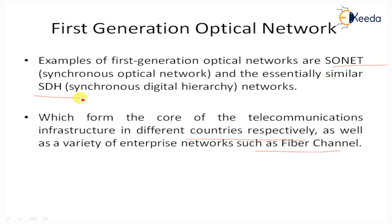First generation networks also include a variety of enterprise networks such as ESCON (Enterprise System Connections), High Performance Parallel Interface (HIPPI), and Fiber Channel networks, which are used for computer interconnections with other computers and peripheral systems.